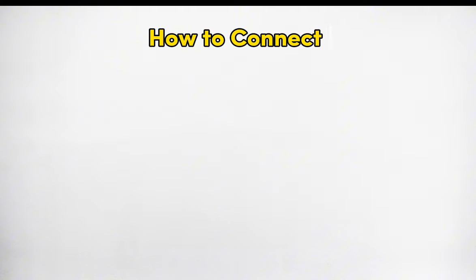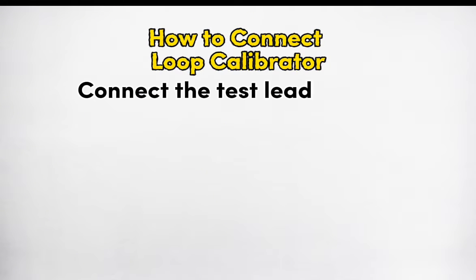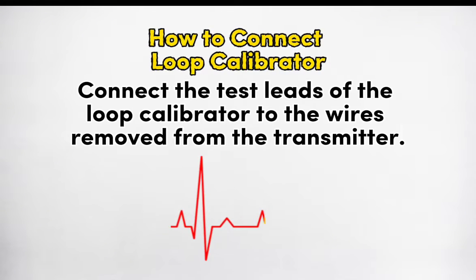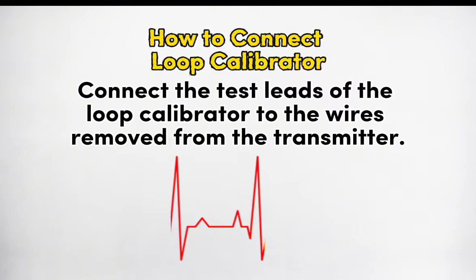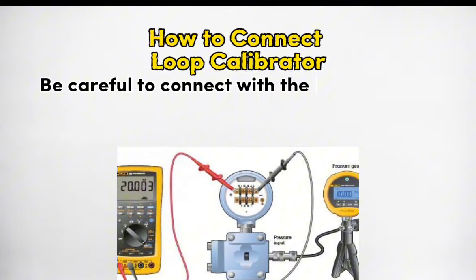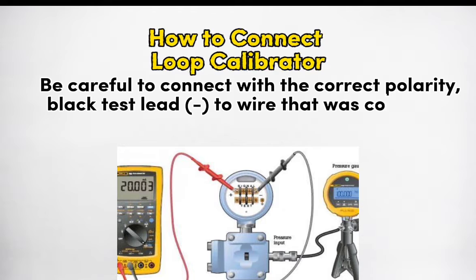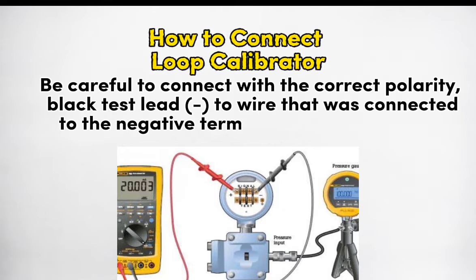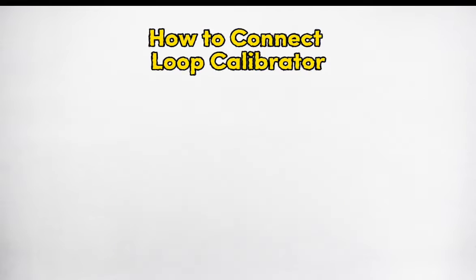How to connect the loop calibrator: connect the test leads of the loop calibrator to the wires removed from the transmitter. Be careful to connect with the correct polarity — black test lead to the wire that was connected to the negative terminal of the transmitter, red to the positive wire.